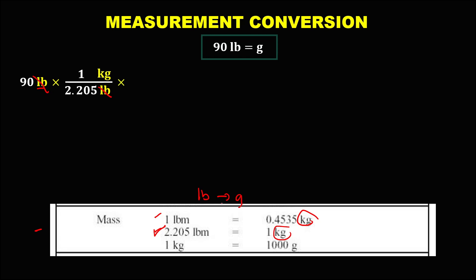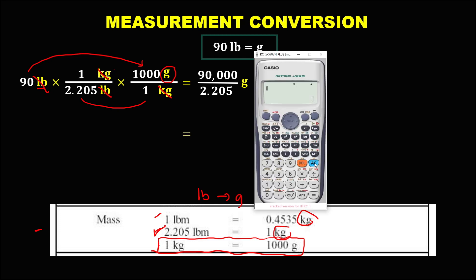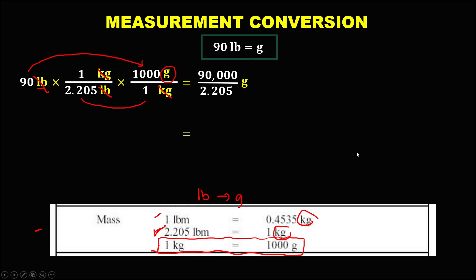Convert this kilogram to grams using this conversion. Since kilogram is in the numerator, kilogram must be in the denominator and grams must be in the numerator. Cancel — the unit is now in grams. We have 1 kilogram is equal to 1,000 grams. To simplify: 90 times 1,000 equals 90,000, divided by 2.205. So we have 90,000 divided by 2.205 equals 40,816.33 grams.